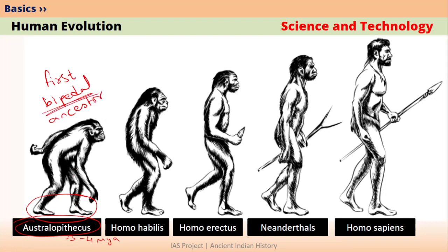Why bipedal? Bi means 2, pedal means feet. It was walking on 2 feet. If an animal is walking on 4 feet, it is called quadrupedal. Please remember that Australopithecus was the first bipedal ancestor of human beings.